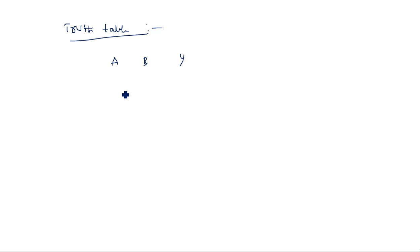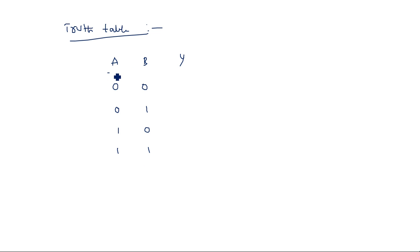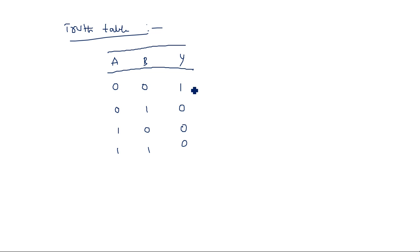If you see the truth table of the NOR gate, with inputs A and B and output Y: for inputs 0,0 the output is 1, and in the remaining cases the output of NOR gate is 0. So the output is 1, triple 0. If you see the OR gate, the output is 0, triple 1 — opposite is the case here.